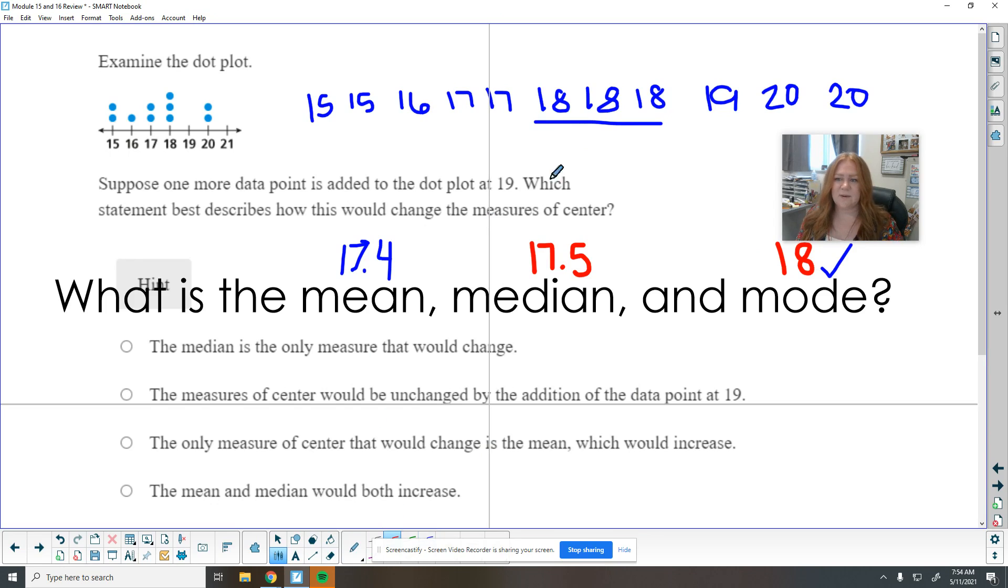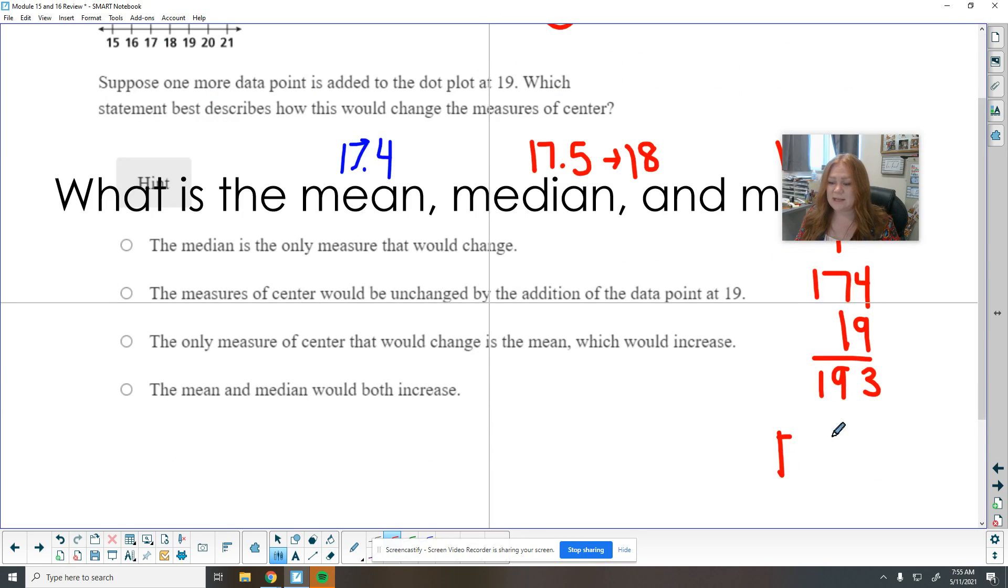My median, let's see. So I added a number here. It could shift it a little bit bigger depending on how the numbers fall. So we had 15 to 20, 15 to 20, 16 to 19, 17, 18, 17, 18. So it did shift it up just a tiny bit. And so we had 174 and we're adding on 19. And we've got 193 and we're dividing by 11. So let's see how that changes here.